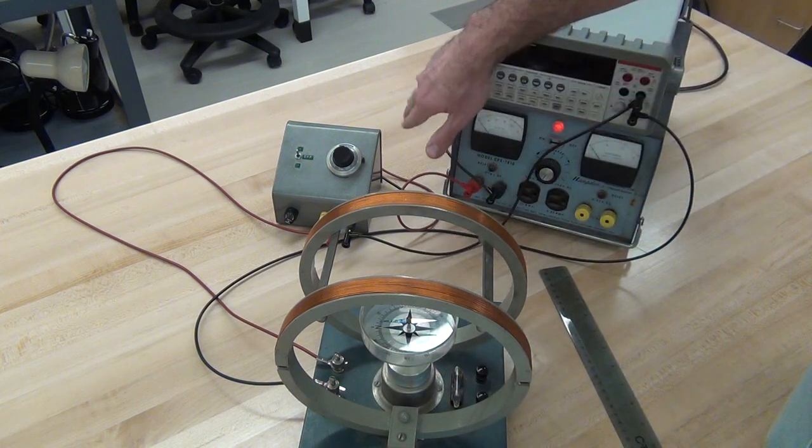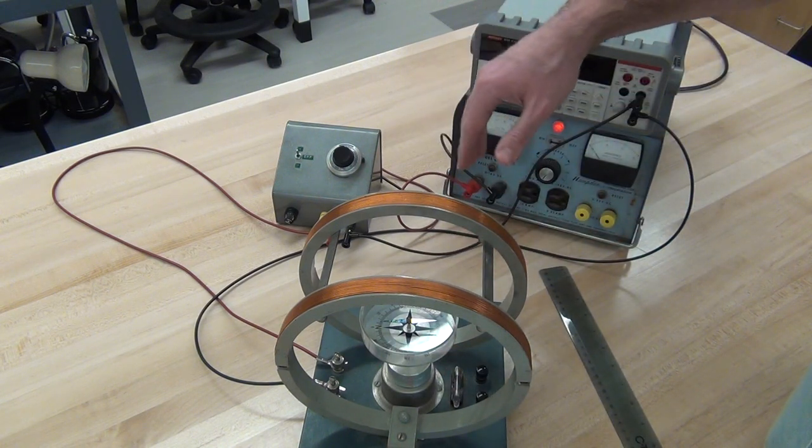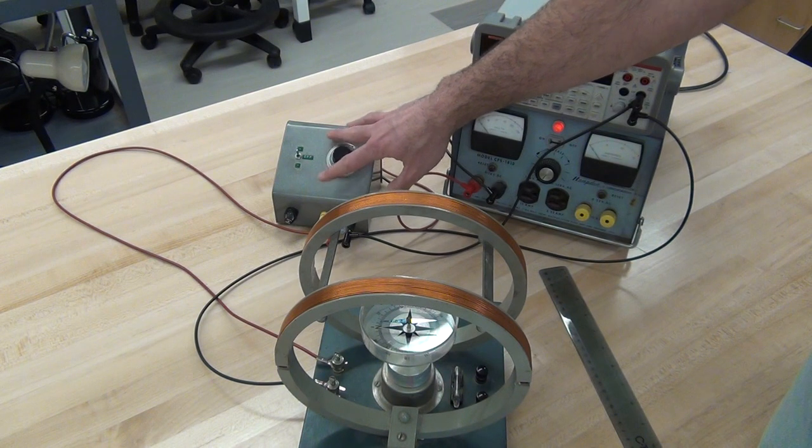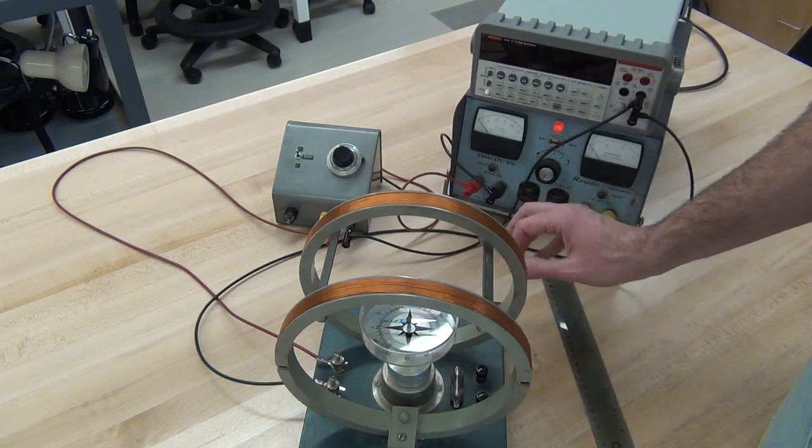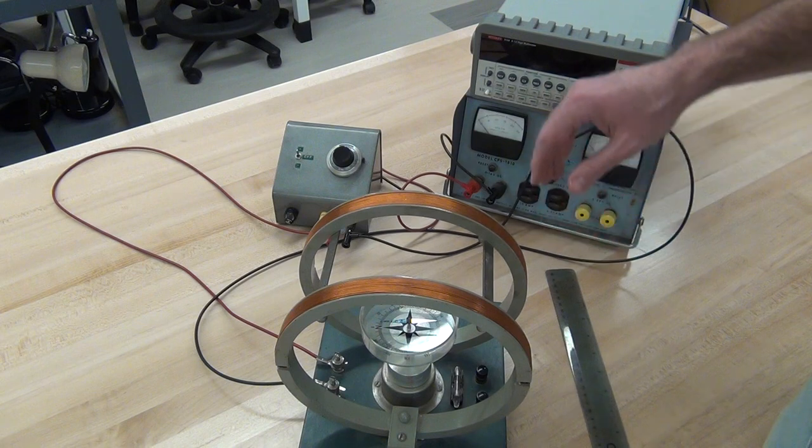Powering our Helmholtz coil, we have the Hampton power supply, and we're going to use a voltage divider so that we get a slightly more fine-grained ability to adjust that.